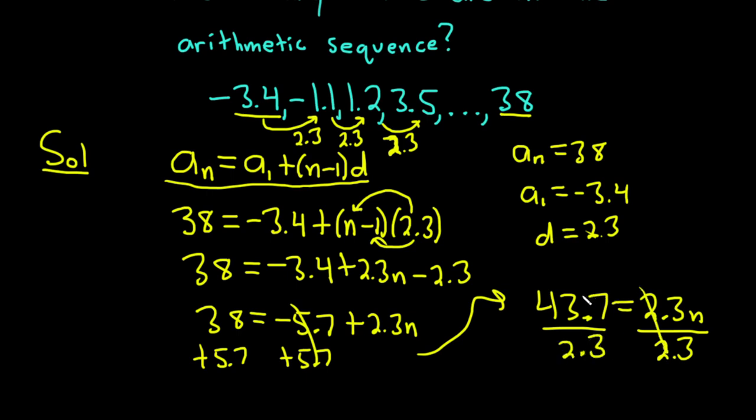We've got 43.7 divided by 2.3. 19. So you get 19 terms. So you know you did it wrong when you do this and you don't get a whole number. So that'd be a problem, right? So I'm very happy that we got 19 because that's a whole number and all is good. So that's how you do it.